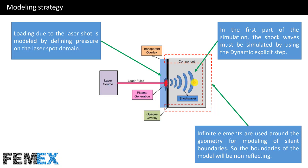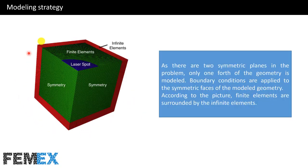After the impact of the laser pulse to the workpiece, shock waves are created. Loading due to the laser shot is modeled by defining pressure on the laser spot domain. In the first part of the simulation, the shock waves must be simulated using the dynamic explicit step, and infinite elements are used around the geometry for modeling of silent boundaries so the boundaries will be non-reflecting. This is one-fourth of the flat geometry; as there are two symmetric planes in the problem, only one-fourth of the geometry is modeled.